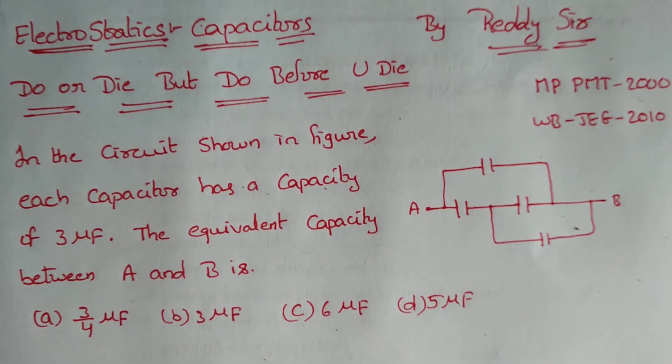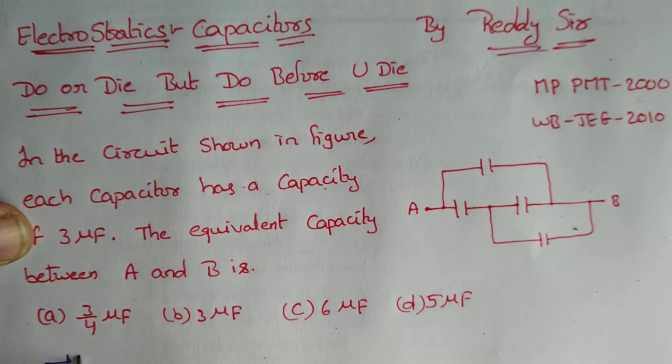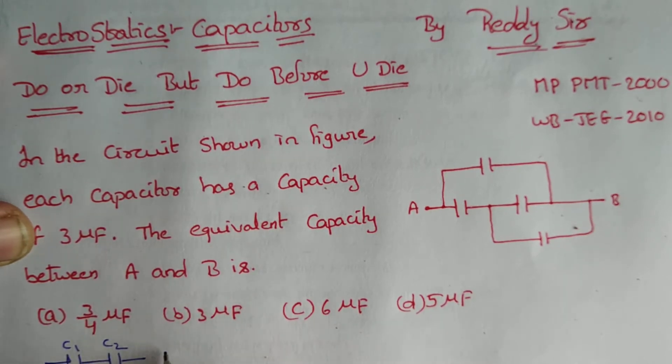For this first of all we should know that if the two capacitors are in series, let us consider C1 and C2, then effective capacitance we can give as C1 C2 divided by C1 plus C2.